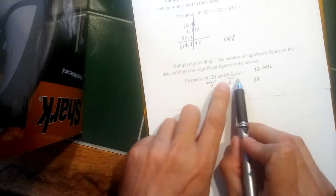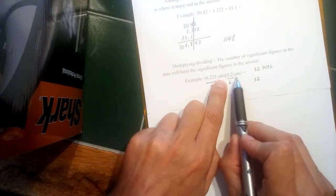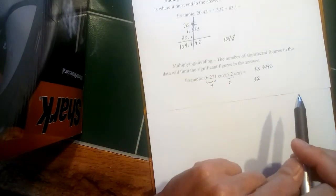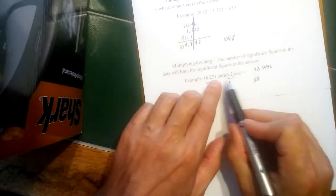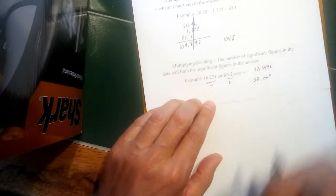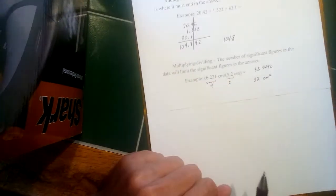Now one other difference here with multiplying and dividing, you do have to be very careful about your units because units will multiply along with the numbers, or they'll be divided by each other along with the numbers. So this would be 32 square centimeters because we'd have to multiply our units as well.